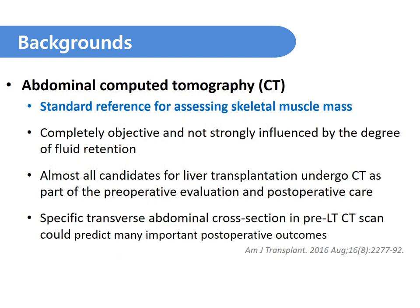Abdominal CT is the standard reference for assessing skeletal muscle mass because it is completely objective and not strongly influenced by the degree of fluid retention. Almost all candidates for liver transplantation undergo CT as part of preoperative evaluation and postoperative care. There was a report that a specific transverse abdominal cross-section in pre-LT CT scan could predict many important postoperative outcomes.